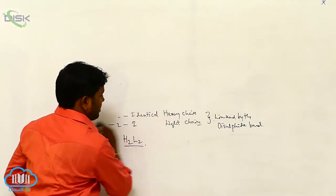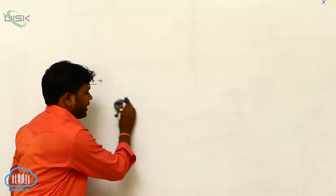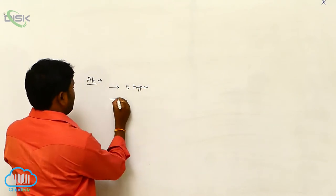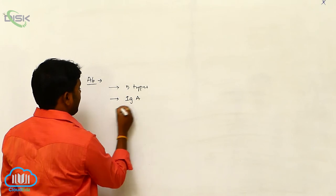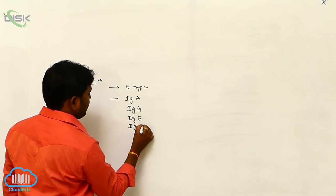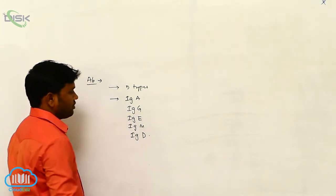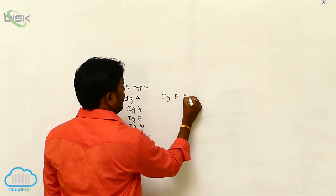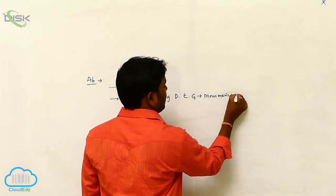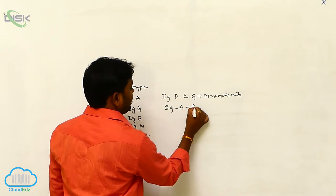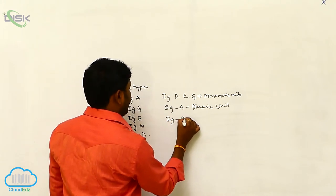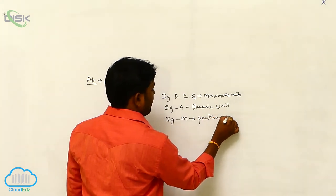The antibodies are five types: IgA, IgG, IgE, IgM, and IgD. IgD and IgG are monomeric units, IgA is a dimeric unit, and IgM is a pentameric unit.